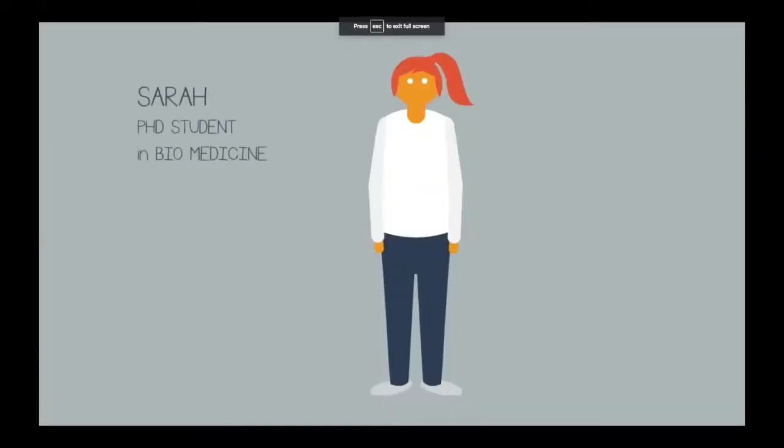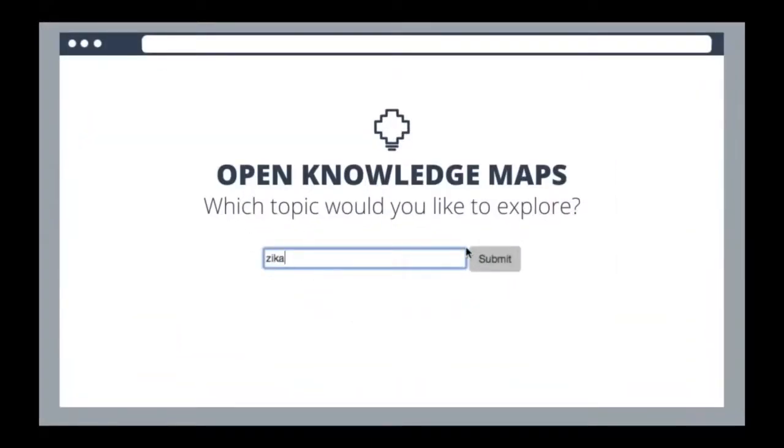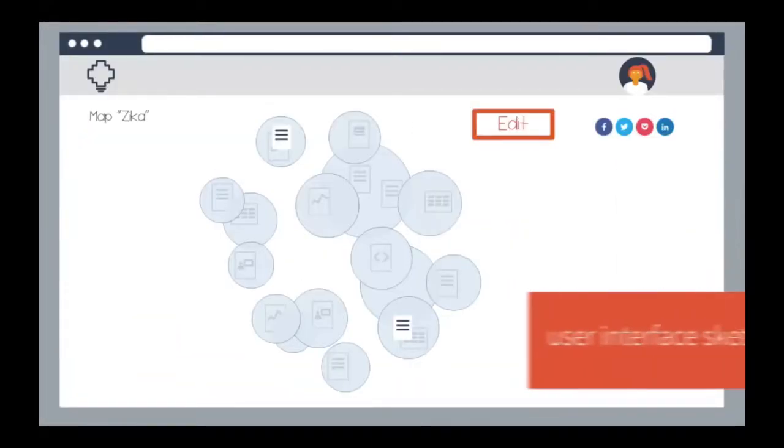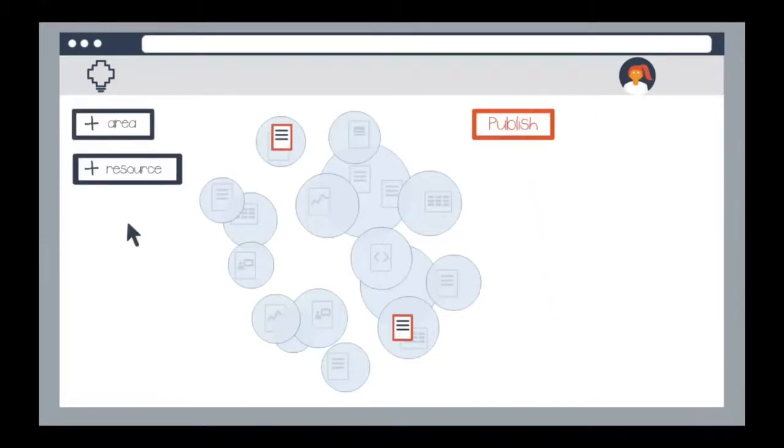Sarah is a first-year PhD student in biomedicine, starting her thesis on the Zika virus. Open Knowledge Maps has automatically created a map on the Zika virus for her. Sarah identifies a number of articles that are in their own area, so she goes into edit mode. She adds a new area and drags the papers she found into the newly created bubble. She adds a title and places the area on the map.